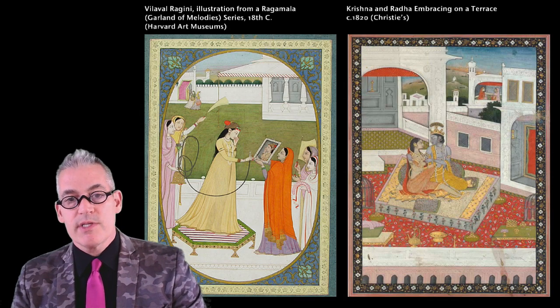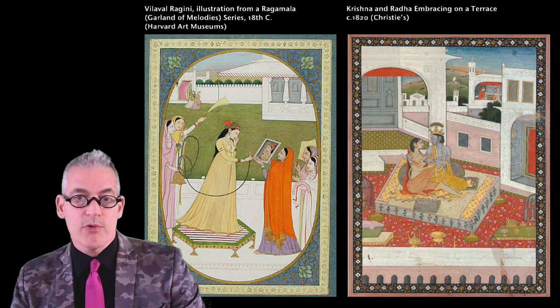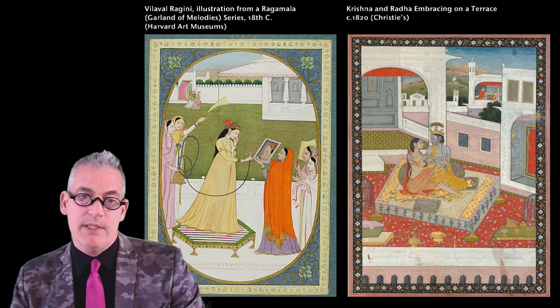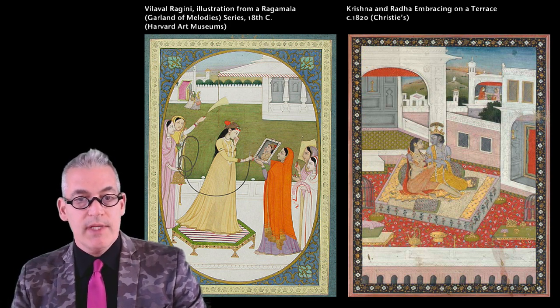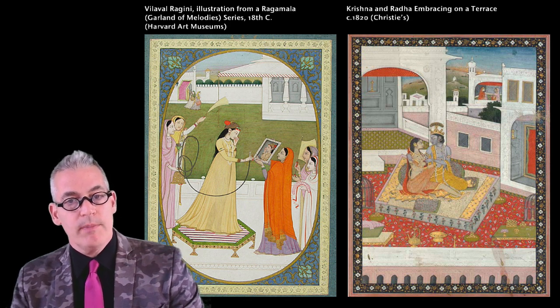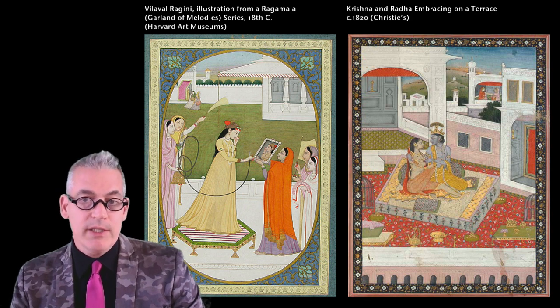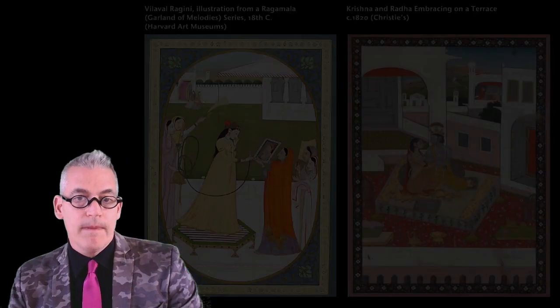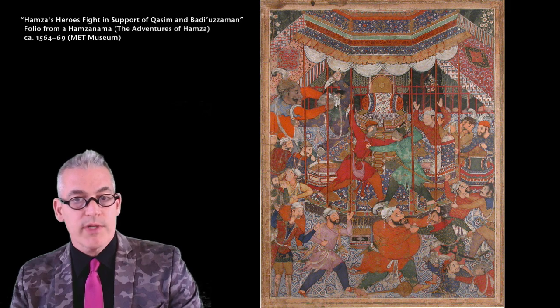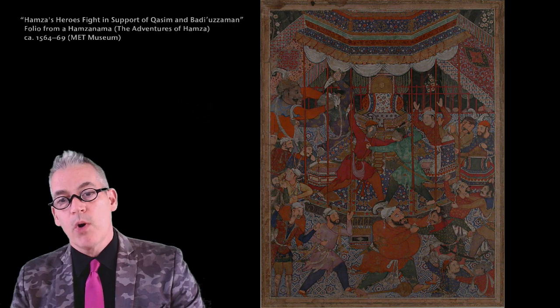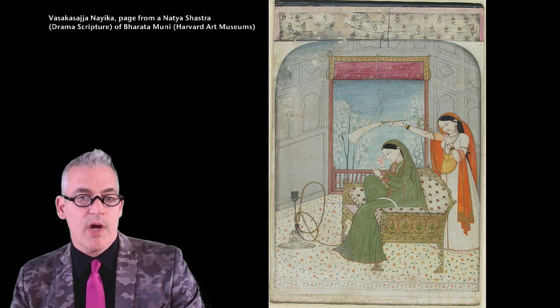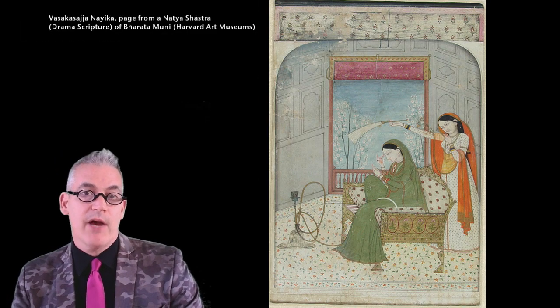Many of the compositions and figure groupings embroidered onto rumals were copied from Pahari miniature paintings. To appreciate the images on rumals, we need to look first at Pahari paintings. Pahari paintings developed from Mughal paintings in the early 18th century. Mughal paintings focus on portraits of specific historical figures and stories related to the Mughal rulers and their families. Pahari artists shifted the subject matter, focusing on the more abstract eternal love of Radha and Krishna, as well as other more spiritual narratives.